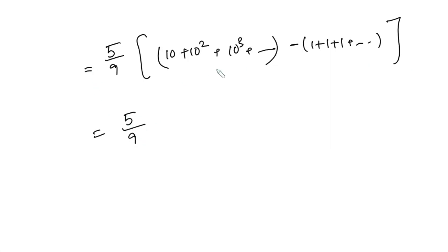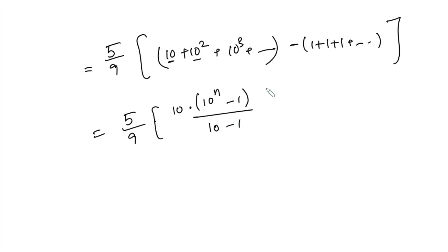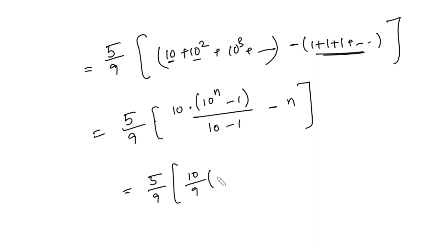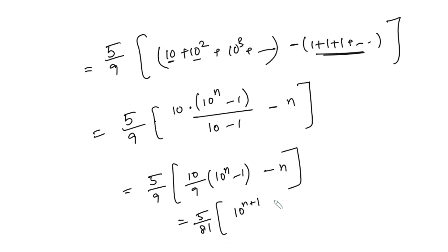For the first part we apply the sum of GP formula: a times (r to the power n minus 1) over (r minus 1), where r is 10 squared divided by 10, which is 10. This gives 10 times (10 to the power n minus 1) over 9. Negative 1 added n times equals negative n. So the final answer is 5 over 9 times 10 over 9 times (10 to the power n minus 1) minus n, which simplifies to 5 over 81 times (10 to the power n+1 minus 10) minus 9n.